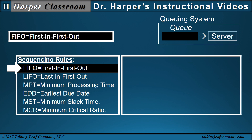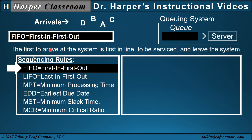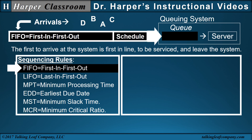Let's start with the first one: FIFO, first in, first out. Assume the jobs arrive in this order — first job C, then job A, then job B, and finally job D. The FIFO sequencing rule indicates the first to arrive at the system is first in line, first to be serviced through the server, and first to leave the system. So jobs ordered by the FIFO sequencing rule will result in the schedule: first C, then A, then B, and then D. That's the schedule according to the FIFO sequencing rule.